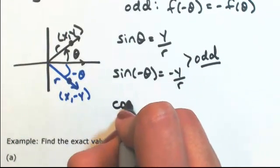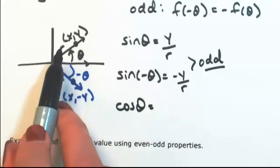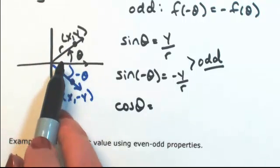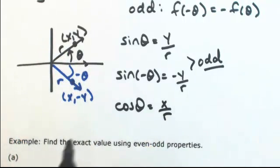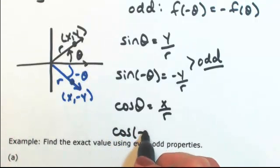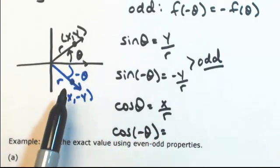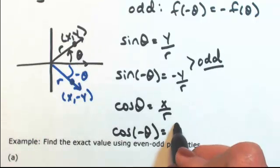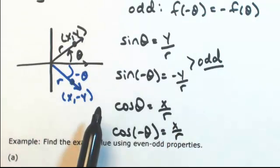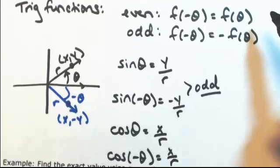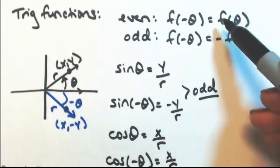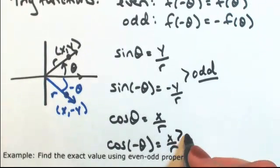Cosine of θ is adjacent over hypotenuse: x/r. Cosine of -θ, adjacent is still x/r. These are exactly the same output. When you get the same output and the negative has no bearing, this is an even function.